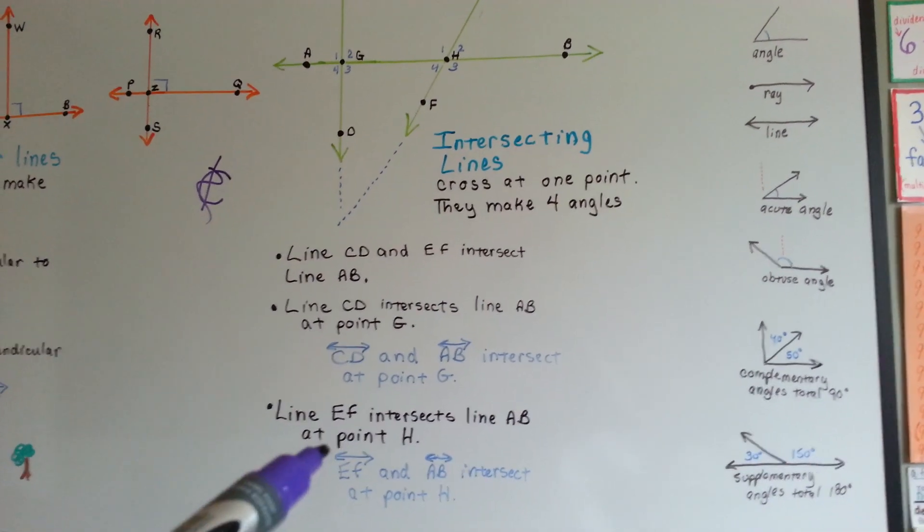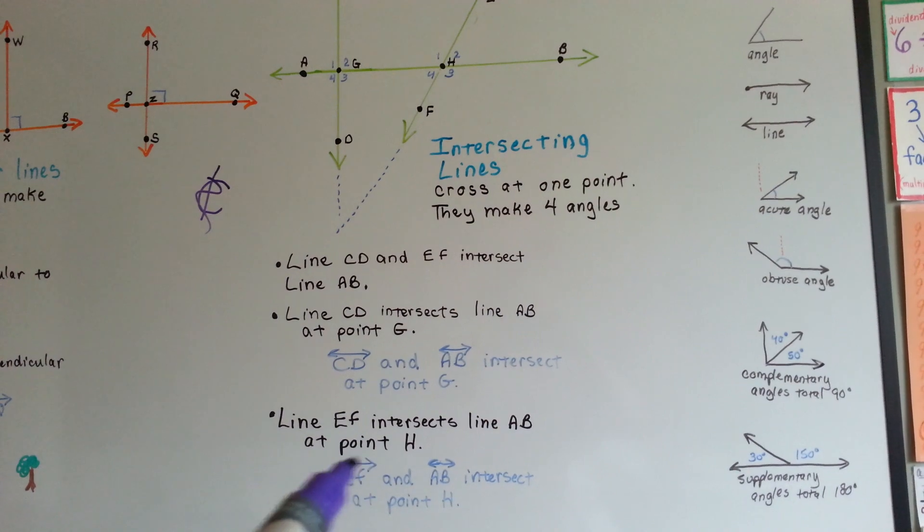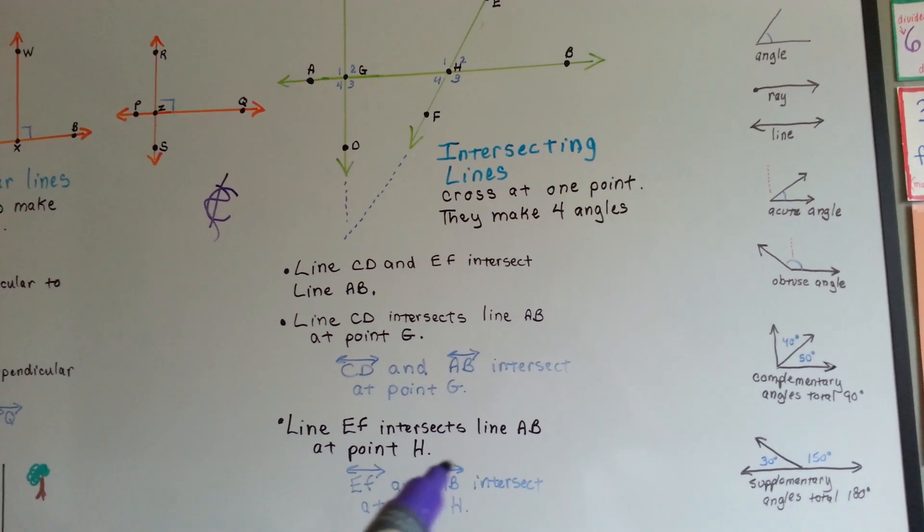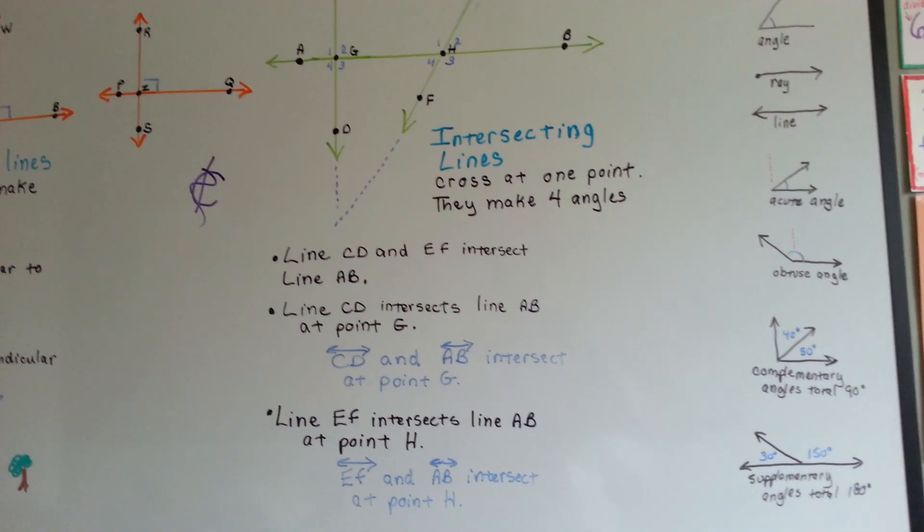It would be written as capital EF, with the double-pointed arrowed line above it, and capital AB, with a double-pointed arrow line above it, intersect at point H. That's how it would be written.